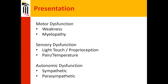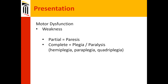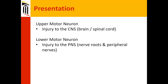It can also present as sensory dysfunction — light touch, proprioception, pain, and temperature — or autonomic dysfunction in sympathetic and parasympathetic pathways. For pure motor dysfunction, remember that paresis is partial and plegia or paralysis is complete. Those are very specific terms — if someone is said to have a paresis versus a plegia, they're talking about two very different processes.